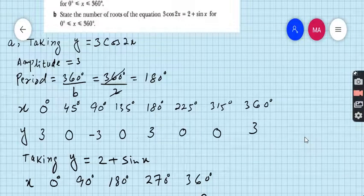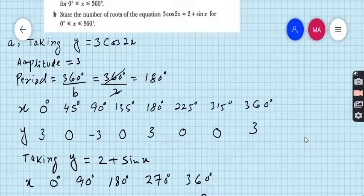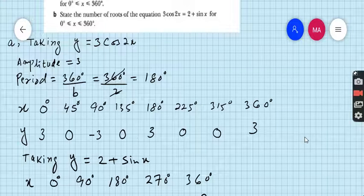When x is 0, so 3cos2 into 0, use calculator, scientific calculator, you will get when x is 0 the value is 3. When x is 45, the value is 0. When x is 90 degrees, the value is minus 3. When x is 135, the value is 0. When x is 180, the value is 3. When x is 225, the value is 0. Finally when x is 360 degrees, then y equals 3cos2 multiplied by 360, you will get from your calculator the value of y is 3. This is the table of values of the equation y equals 3cos2x.